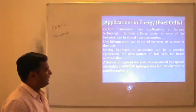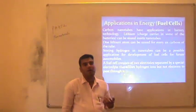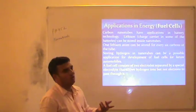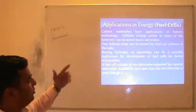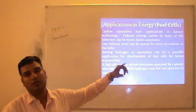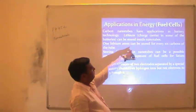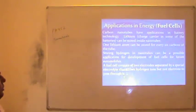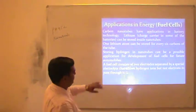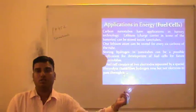Carbon nanotubes have applications in battery technology — how to improve fuel cell properties. Lithium-ion based batteries are available in the market for every field. By replacing the lithium ion with carbon nanotubes, it is possible to increase the efficiency of the fuel cell. One lithium atom can be stored for every 6 carbon atoms of the tube. Storing hydrogen in nanotubes can be a possible application for the development of fuel cells for future automobiles — in the same way as we store lithium ions in every 6 carbon nanotubes.